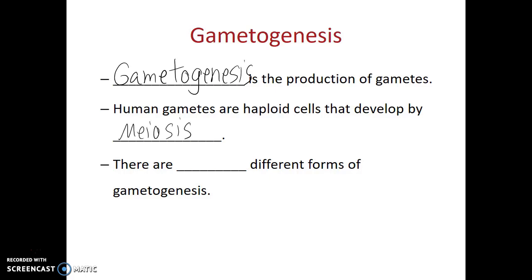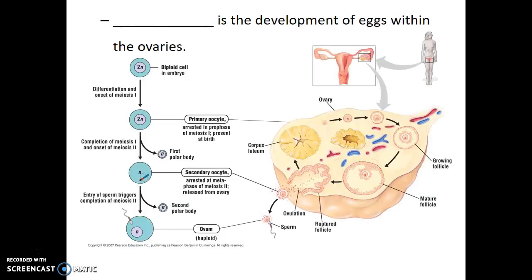There are two different forms of gametogenesis. We call the formation of egg cells oogenesis, and this occurs within the ovaries within human females. The process of oogenesis actually begins within the ovaries of the female before her birth.